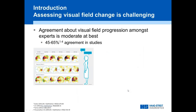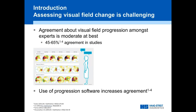Studies on expert agreement on progression are actually quite discouraging, showing agreement somewhere between 45 and 65 percent, which is not that high. There's also unpublished data showing the same doctor on two different days disagrees with themselves 10–20% of the time. But these studies also show that progression software really increases the agreement and consistency of decisions — and that's very helpful.